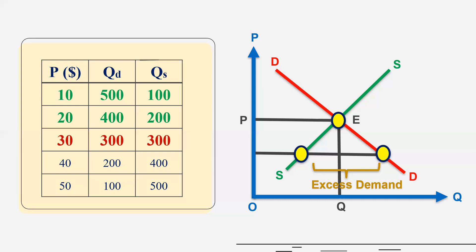So therefore, we have the problem of excess demand and we have the upward pressure on the price. So price will continue to rise until we reach point E and we achieve the equilibrium price OP. So this is the idea of equilibrium price and how market achieves equilibrium.